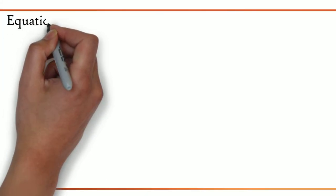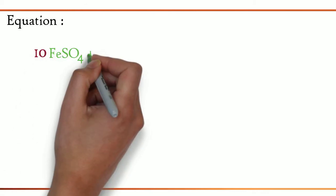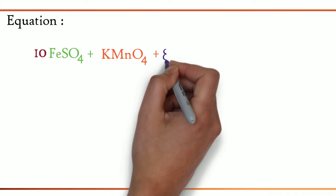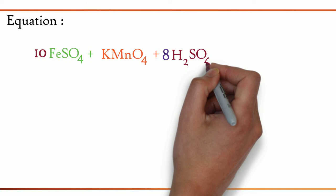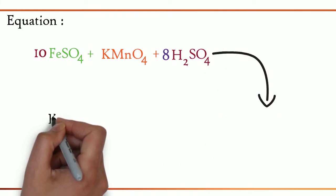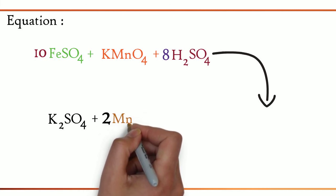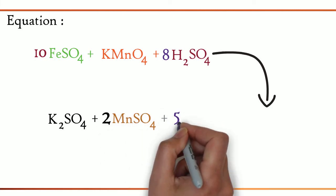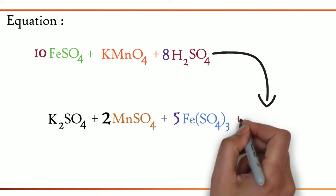The equation is as follows. 10FeSO4 + KMnO4 + 8H2SO4 gives K2SO4 + 2MnSO4 + 5Fe2(SO4)3 + 8H2O.